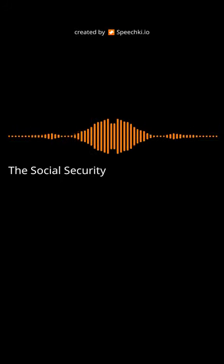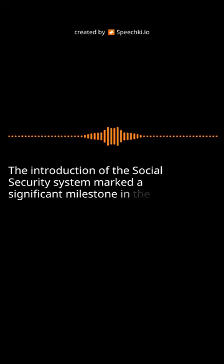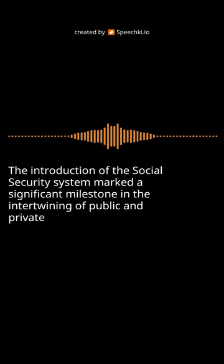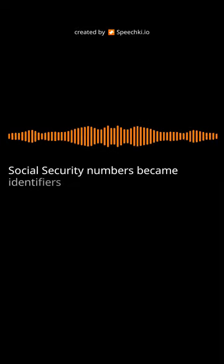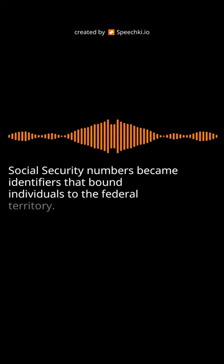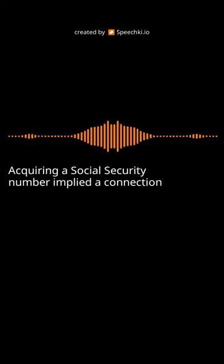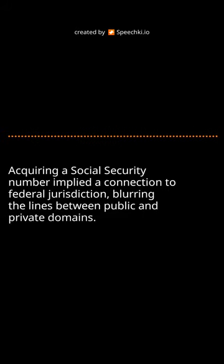The Social Security Conundrum. The introduction of the social security system marked a significant milestone in the intertwining of public and private spheres. Social security numbers became identifiers that bound individuals to the federal territory. Acquiring a social security number implied a connection to federal jurisdiction, blurring the lines between public and private domains.